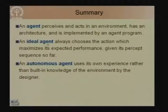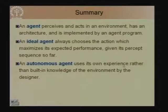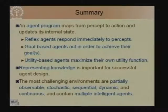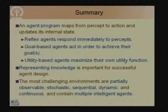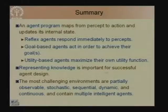In summary of today's lecture: an agent perceives and acts in an environment, has an architecture, and is implemented by an agent program. An ideal agent chooses the action which maximizes its expected performance. An autonomous agent uses its own experience rather than built-in knowledge. An agent program maps from percepts to actions and updates its internal state. Reflex agents respond immediately to percepts; goal based agents act to achieve their goals; utility based agents maximize their utility function. Representing knowledge — including history and background knowledge — is important for successful agent design, and we will study this when we look at state space search.